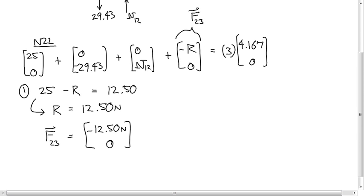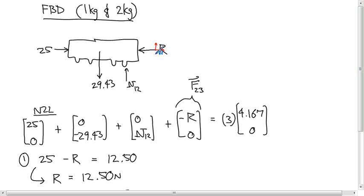Plugging R back into the vector, the force on 2 by 3 equals negative 12.50, 0 — the same result as before. Any questions? The components are derived either by noting the arrow points in the negative x direction, or by computing R times cosine of 180 degrees and R times sine of 180 degrees, both giving negative R, 0.